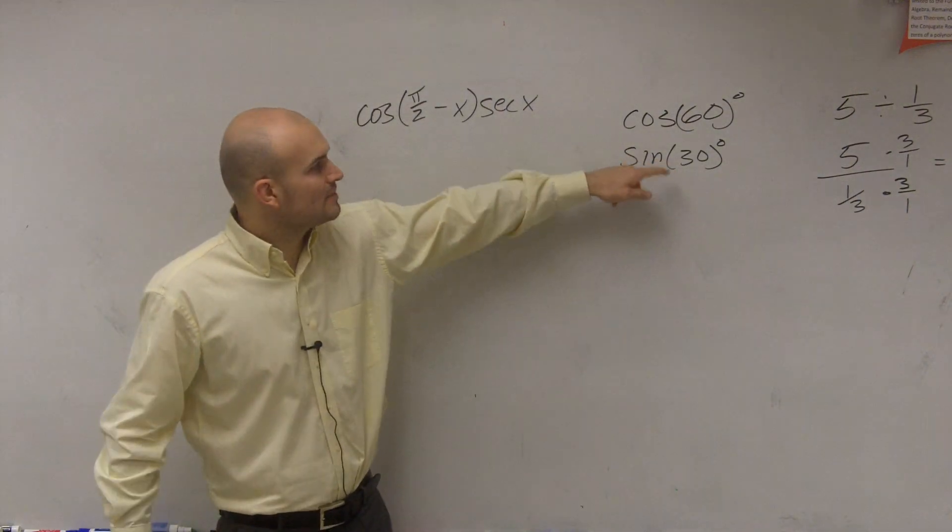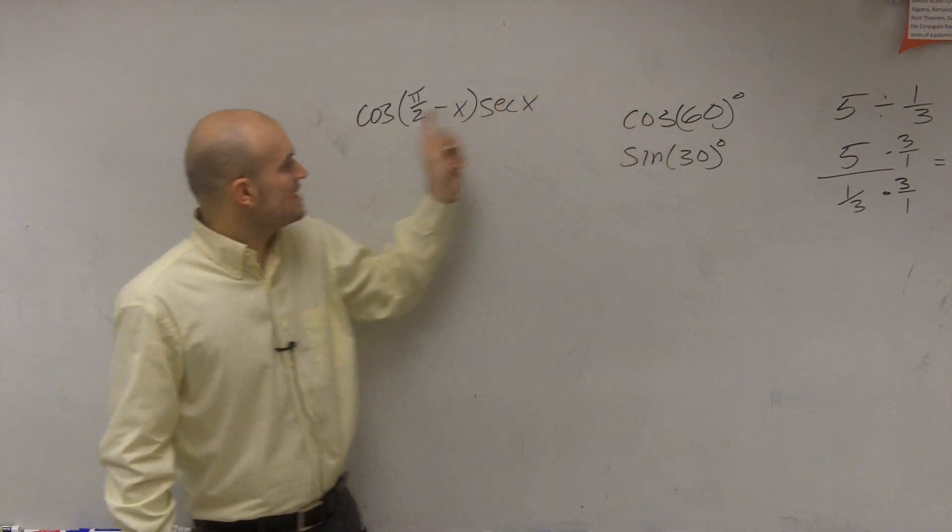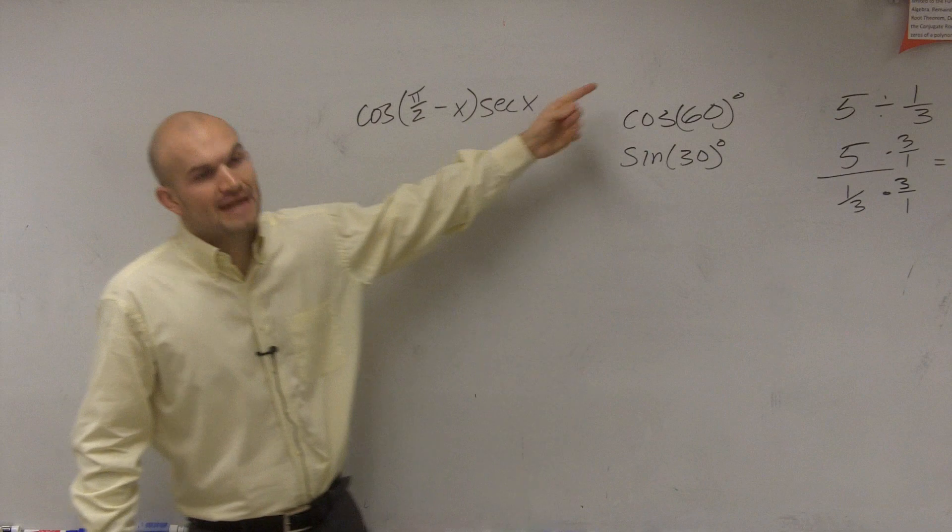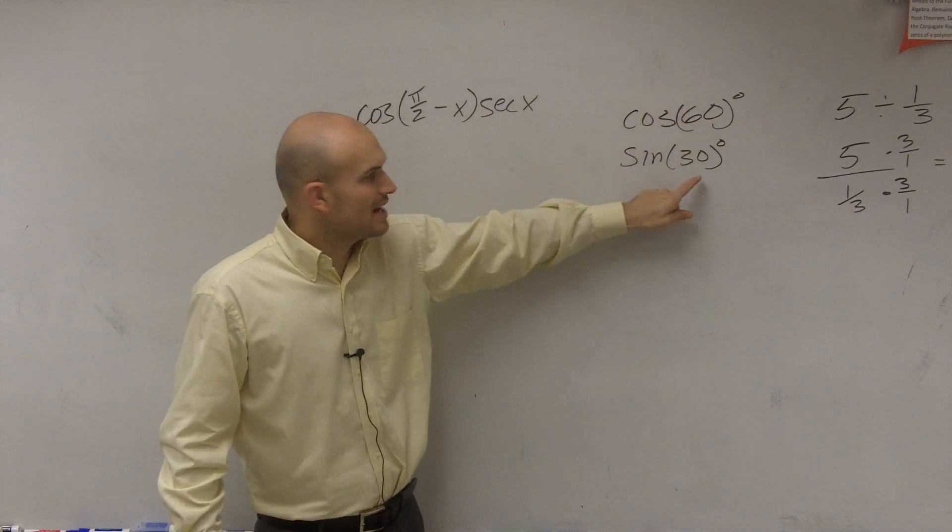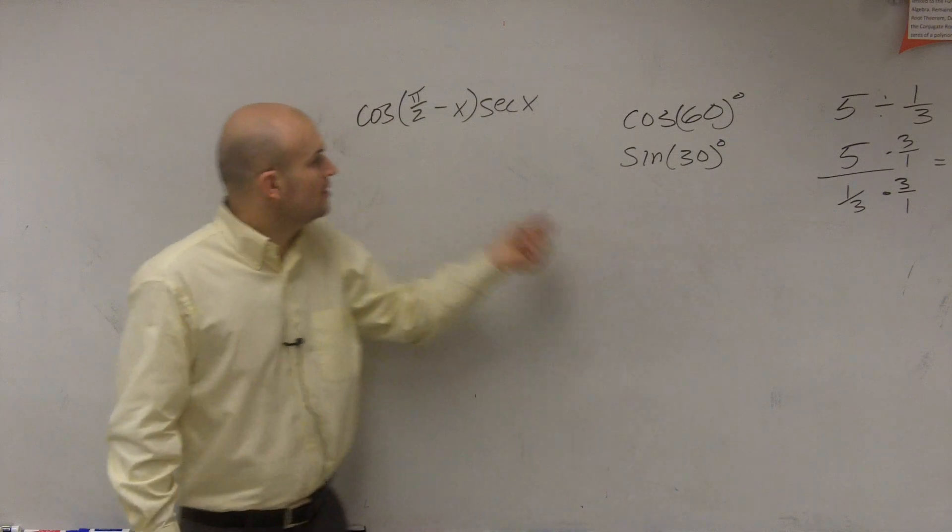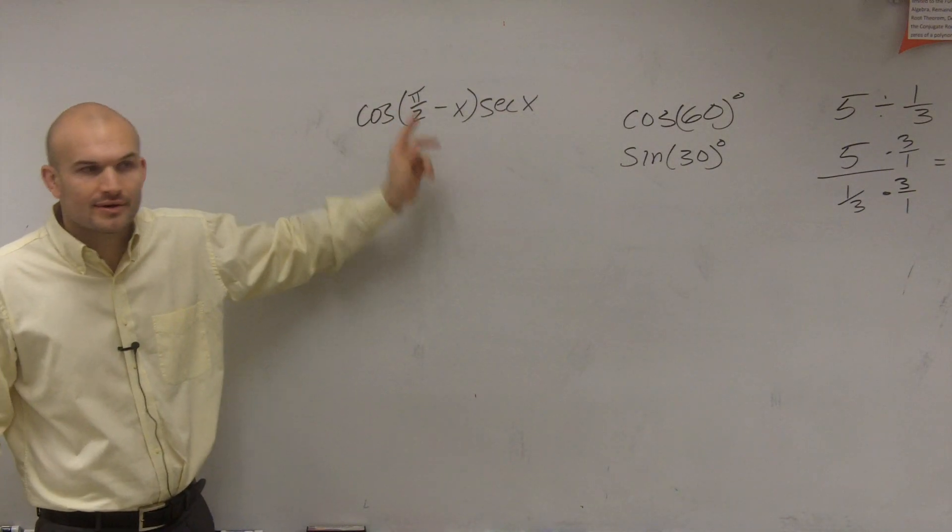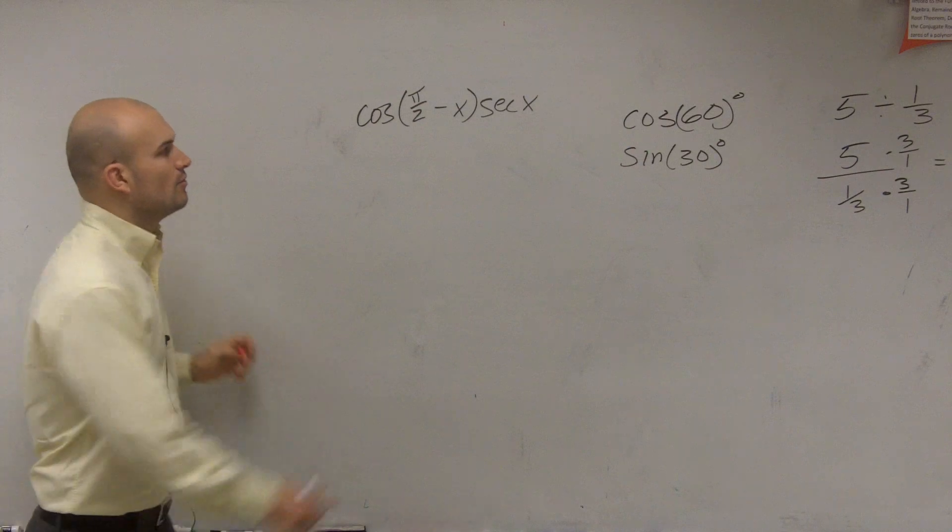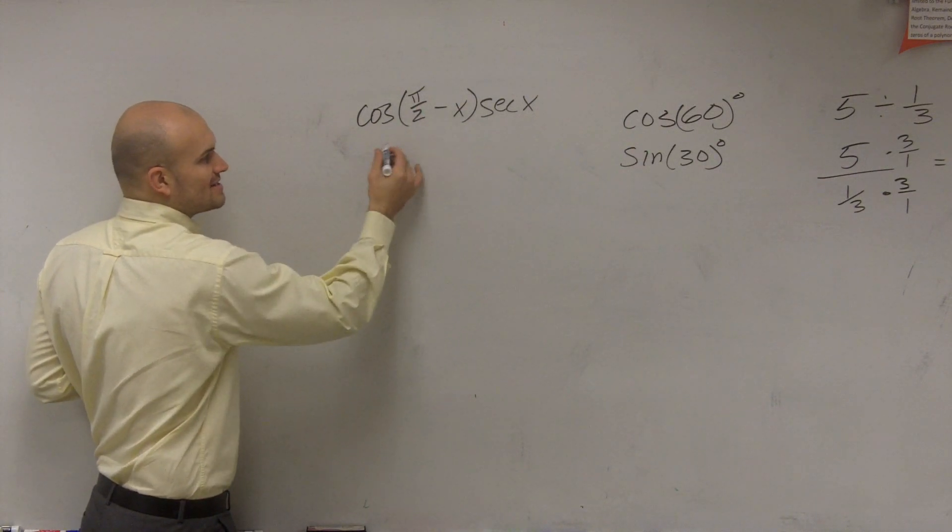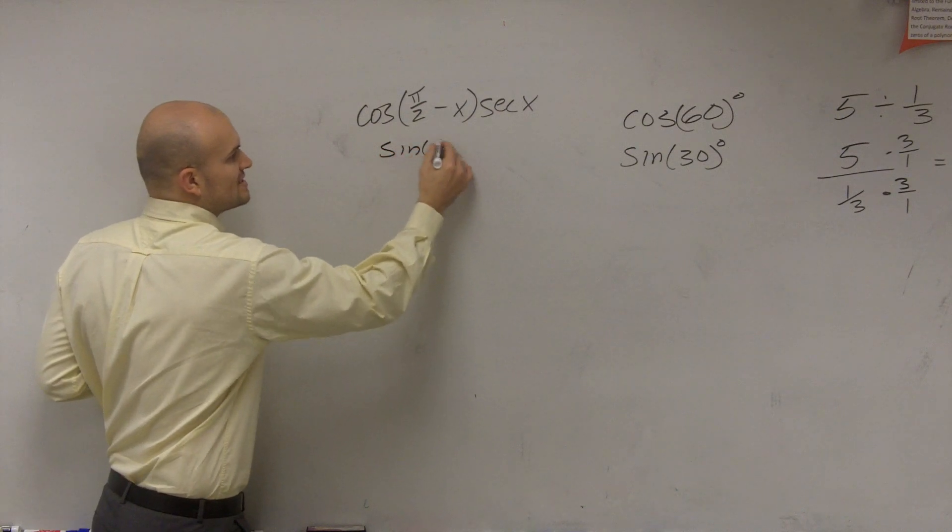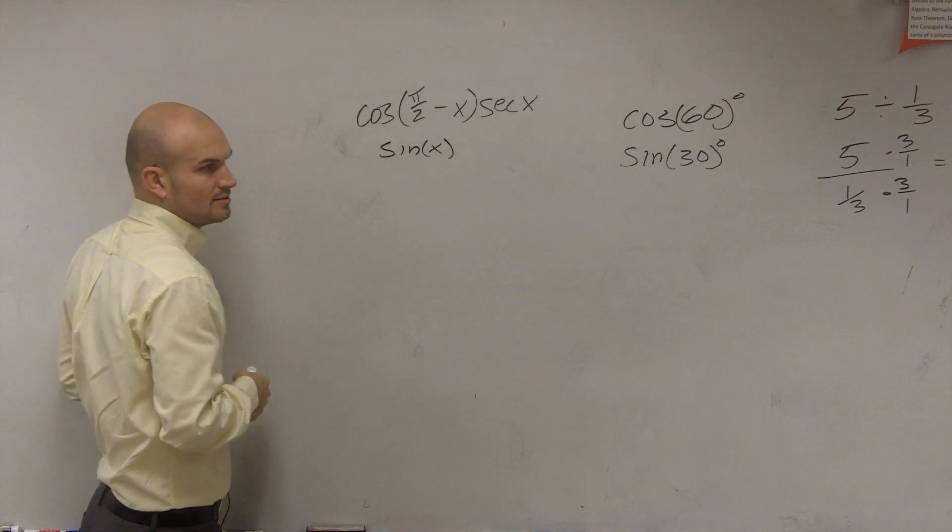So what we did is we found out that the cosine of any angle or 90 degrees minus your angle is going to be equal to sine. Well, π/2 is the same thing as 90 degrees. That's just in radian form. So what we notice is the cosine of π/2 minus x, that's equal to the sine of x.